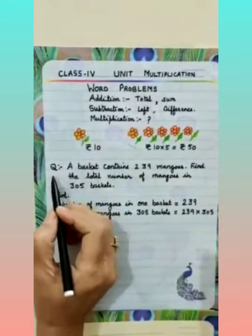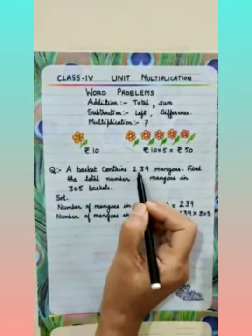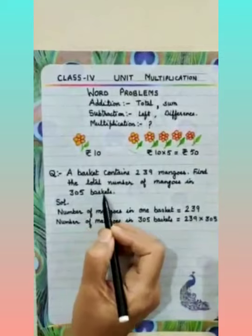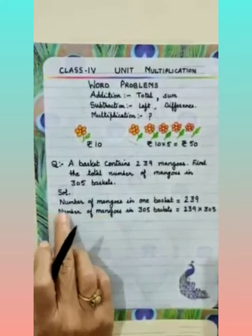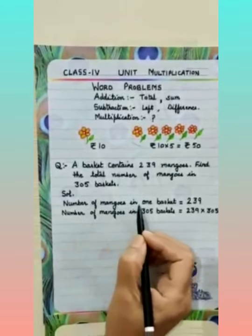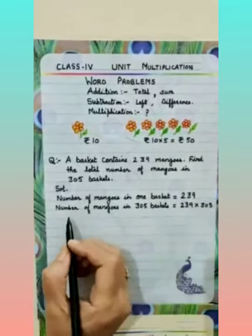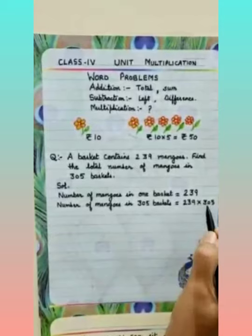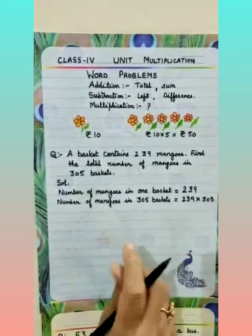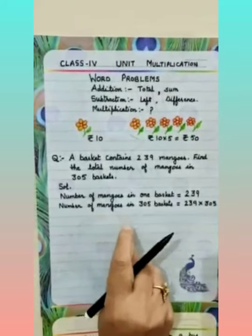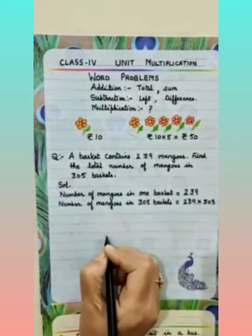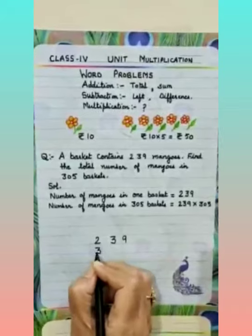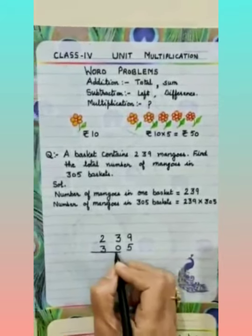Now see this statement sum. A basket contains 239 mangoes. Find the total number of mangoes in 305 baskets. First, write the statement: number of mangoes in 1 basket is 239. Number of mangoes in 305 baskets is 239 multiplied by 305. Since 305 has 3 digits, leave 3 lines to show carry overs. Write 239 and 305 with the multiplication sign.